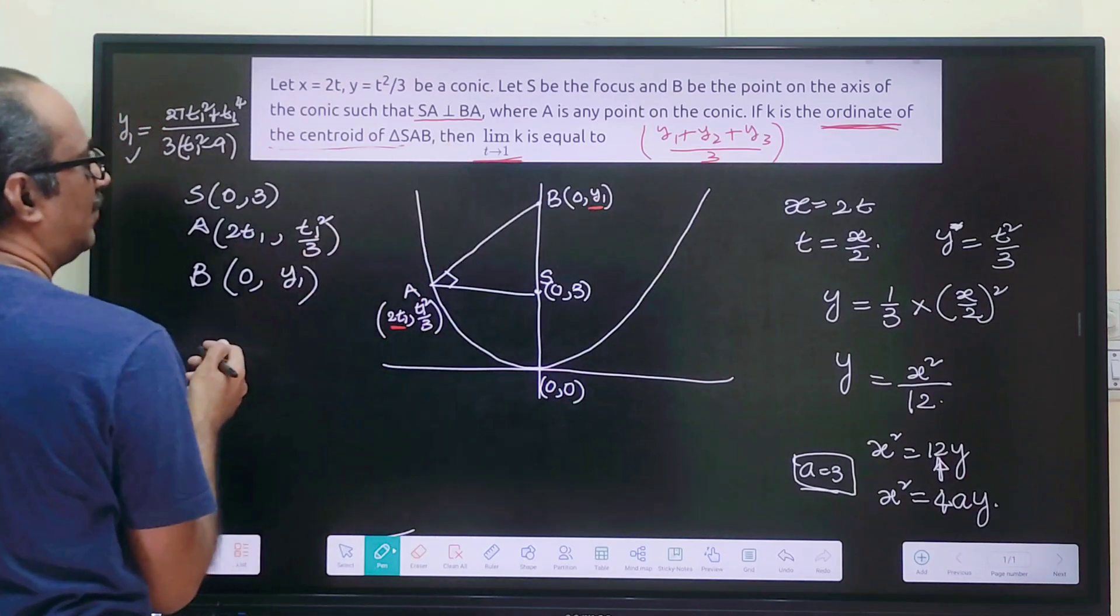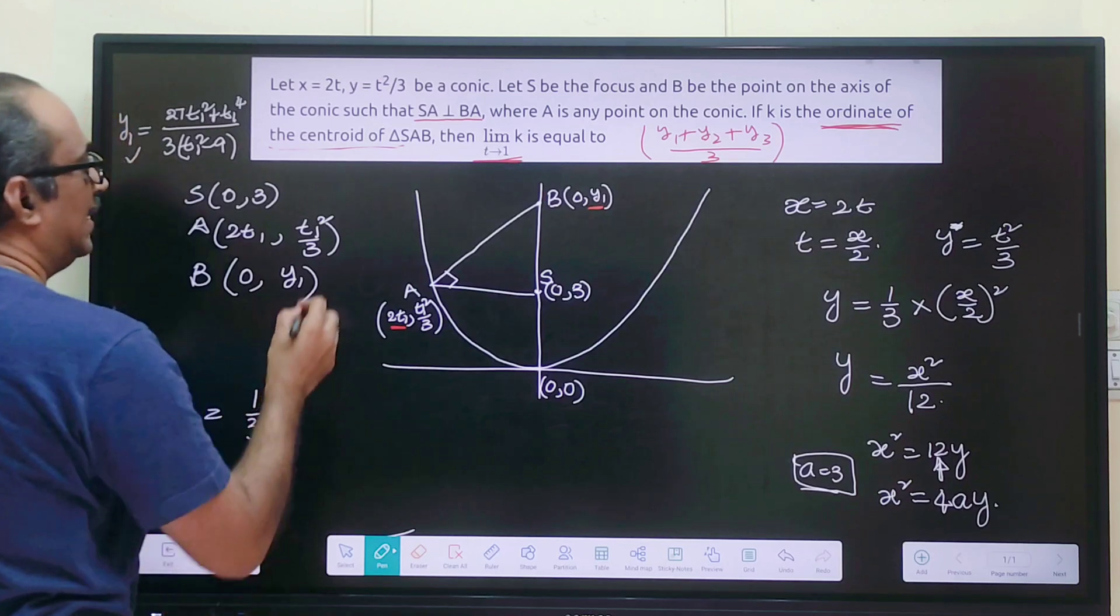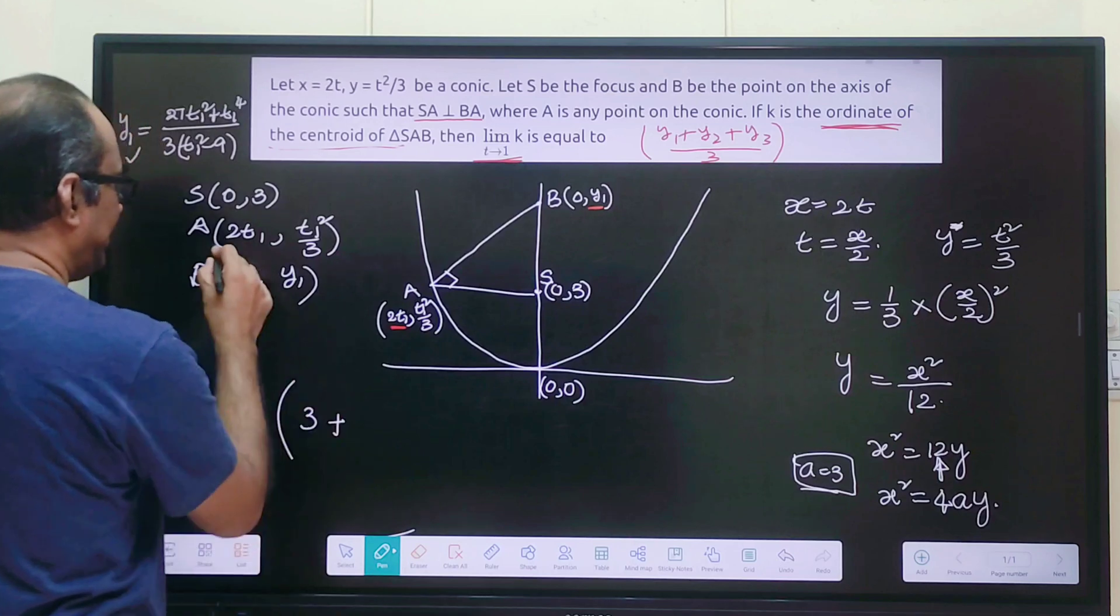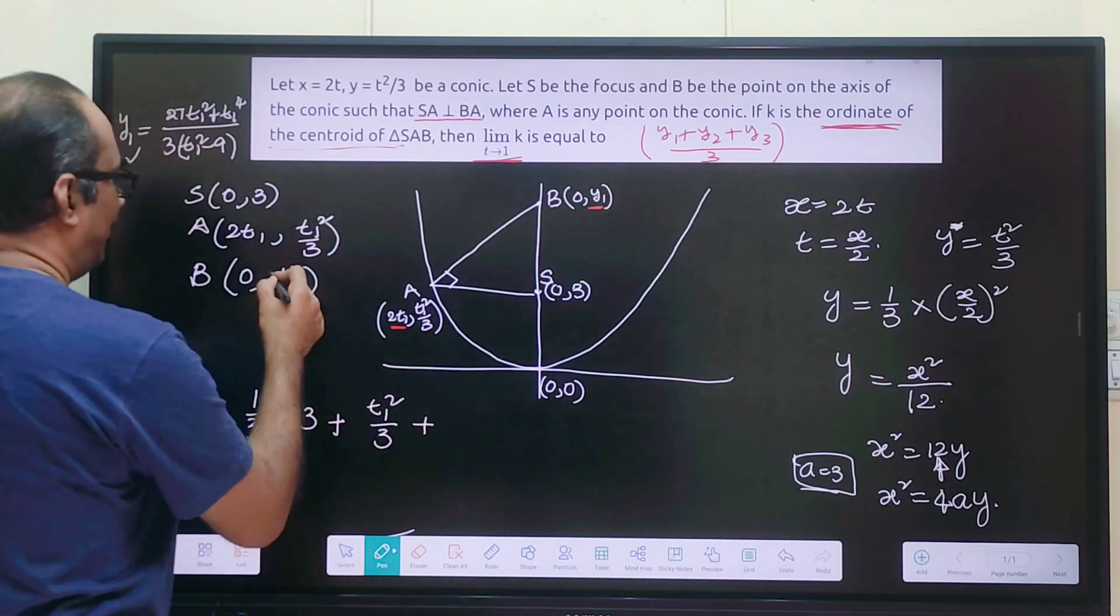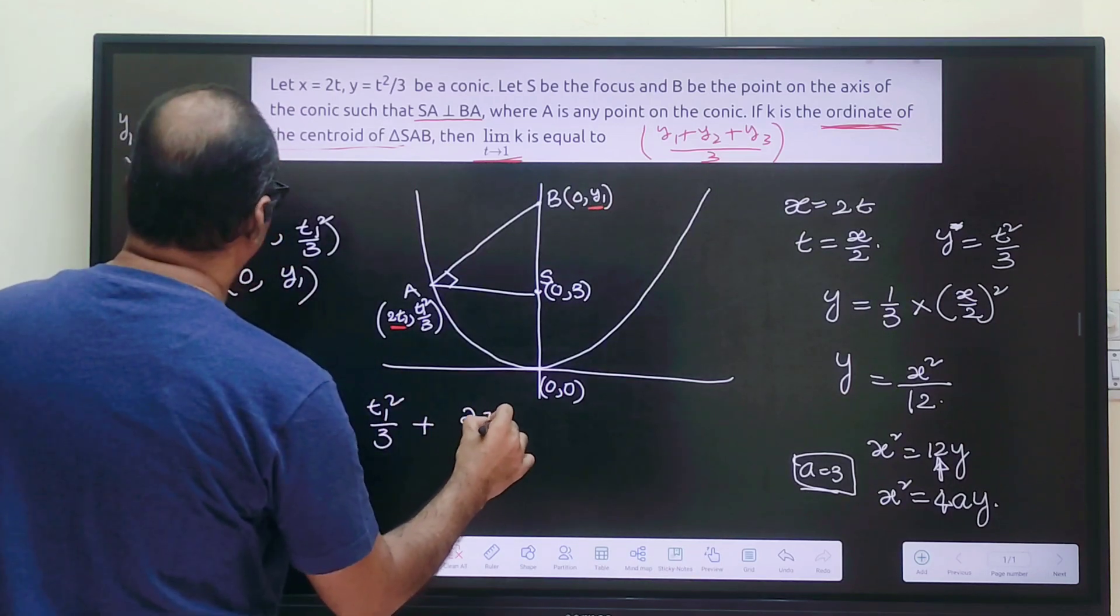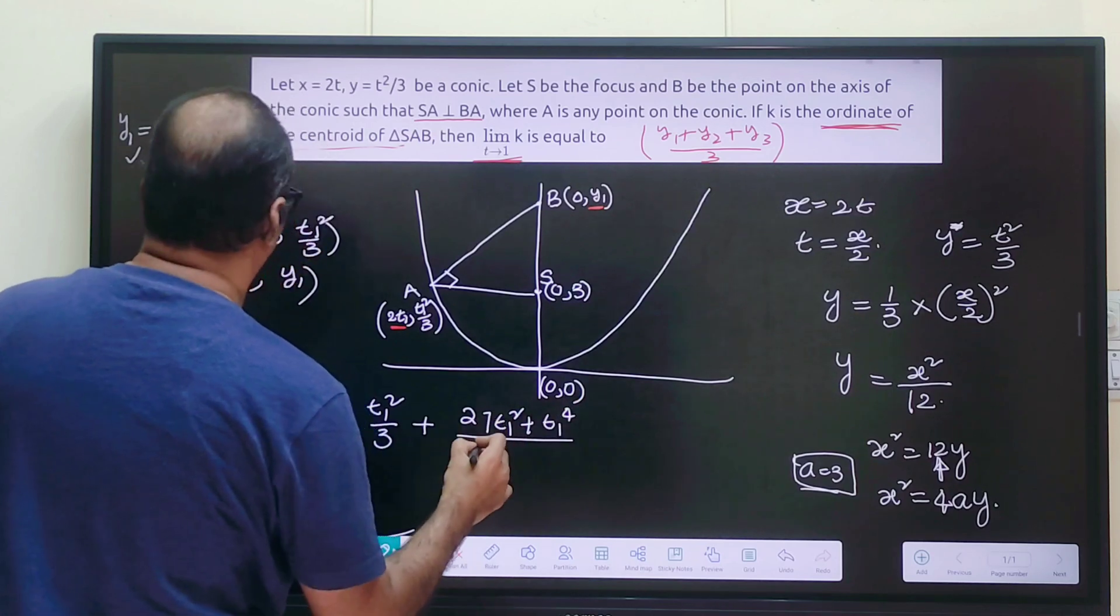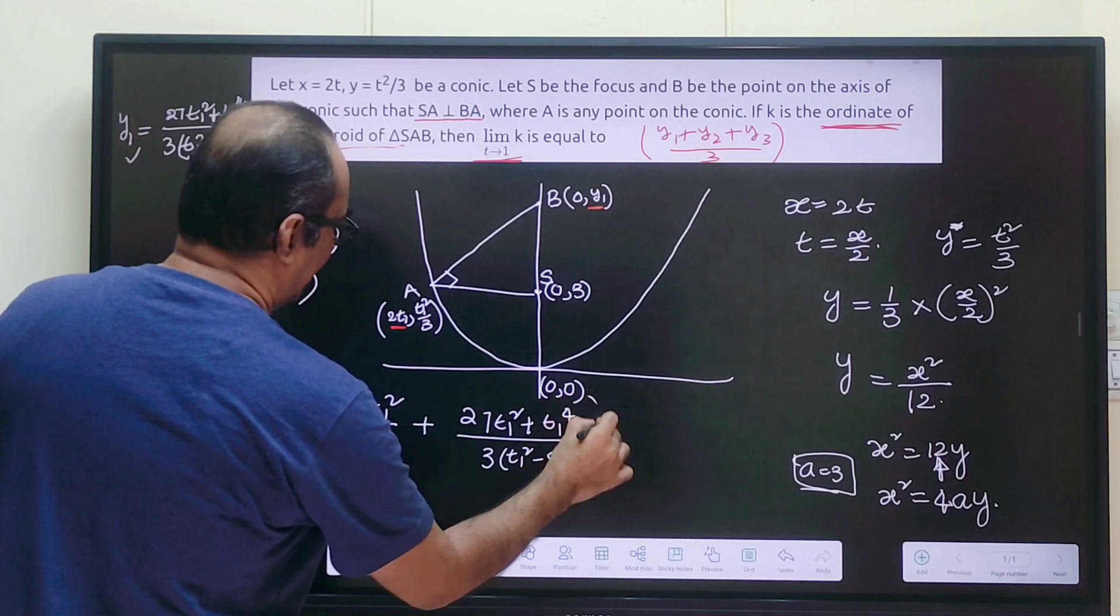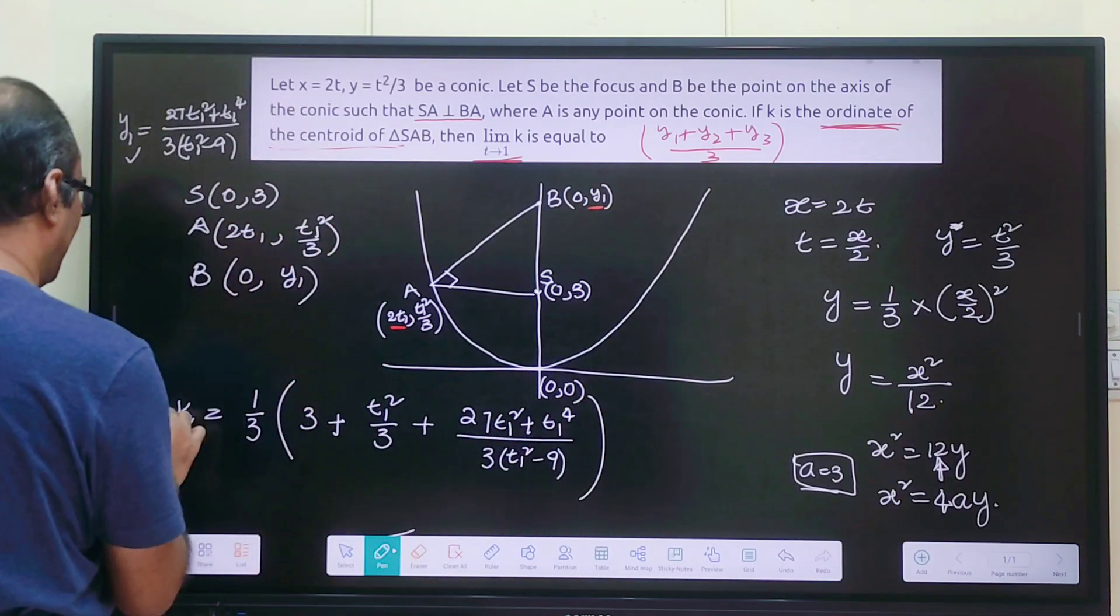So I will write down what will be k. k is (1/3) times the sum of y coordinates of SAB. S's y coordinate is 3, A's y coordinate is t₁²/3, and y₁ is (27t₁² + t₁⁴)/(3(t₁² - 9)). Now this whole thing we have to simplify and substitute t tends to 1.